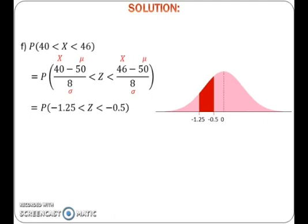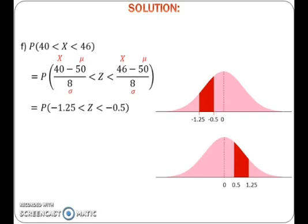To find probability, refer to the standard normal distribution table. Remember that the table gives probability of z greater than a certain positive value. For probability of z between negative 1.25 and negative 0.5, if we reflect the graph to the positive side, we can see that the region for probability of z between negative 1.25 and negative 0.5 is the same as the region for probability of z between positive 0.5 and positive 1.25. To get this probability, take probability of z greater than 0.5 minus probability of z greater than 1.25. Read both values from the table and calculate the probability.